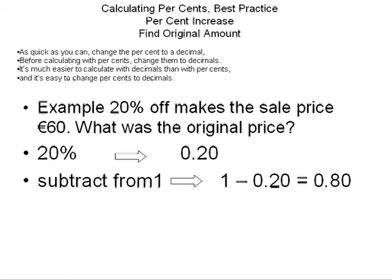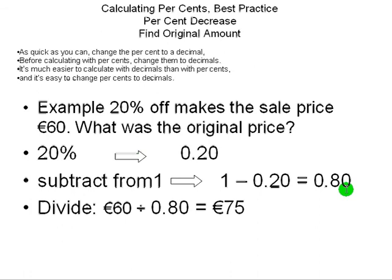In this next example, something is marked 20% off and the resulting price was 60 euros. What is the original price? Again, you change the percent to a decimal, subtract the decimal from 1 to get 0.8 or 80%, and we divide the final price by the percent written as a decimal to find the original price was 75 euros.